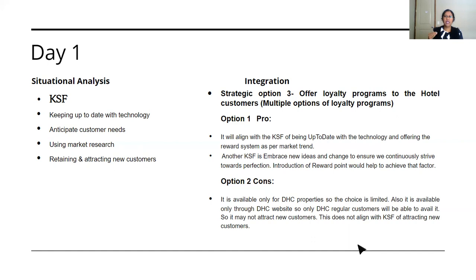On the con side of option two: the loyalty program is available only for DHC properties, so the choice is limited. Based on case facts, this is a limiting factor. Also, it's available only through the DHC website, so only regular DHC customers can avail it — meaning it may not attract new customers. Giving the loyalty program only to existing customers does not align with their key success factor of attracting new customers. Once you write all pros, cons, and options, in your conclusion you can weigh which factors affect more based on qualitative and quantitative analysis, and then conclude accordingly.